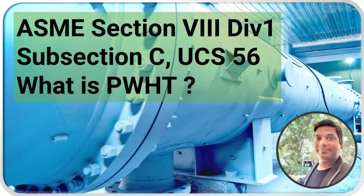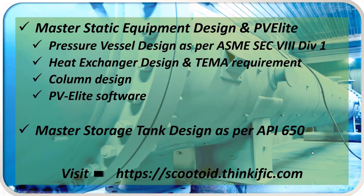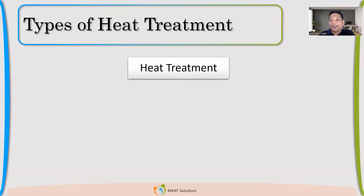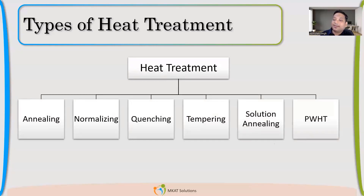What is PWHT? So, what are the different types? Like annealing, normalizing, quenching, tempering, solution annealing, and then your post-weld heat treatment.